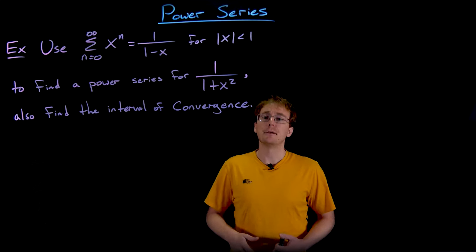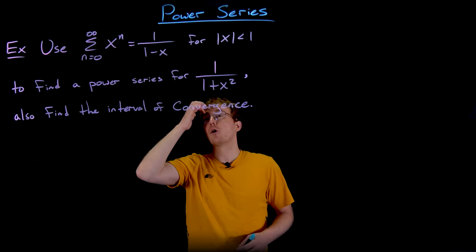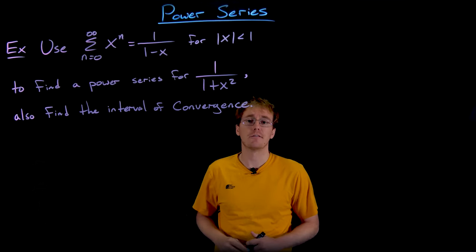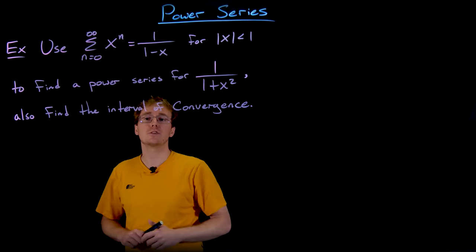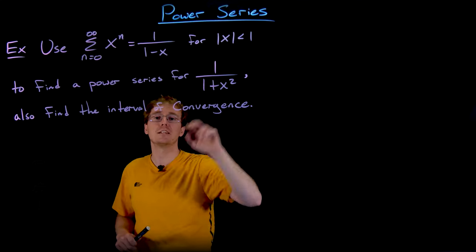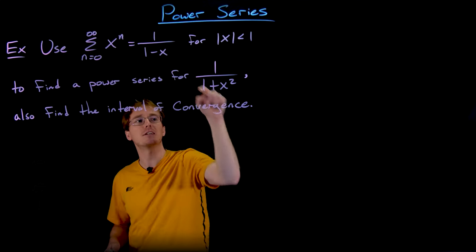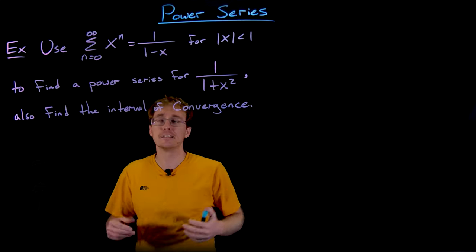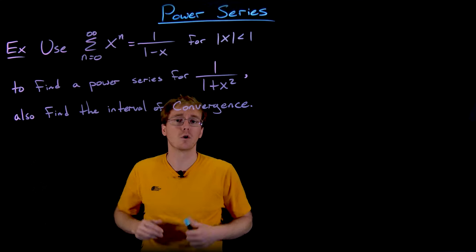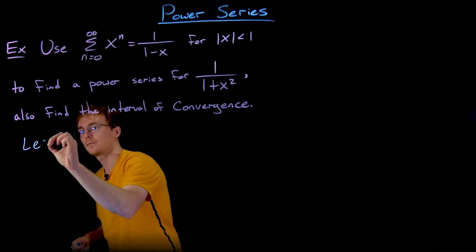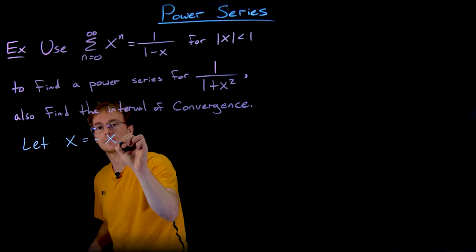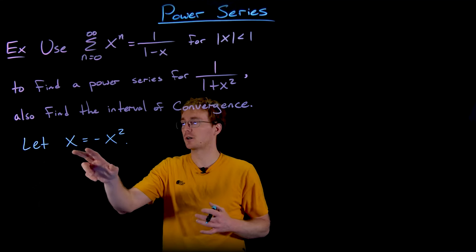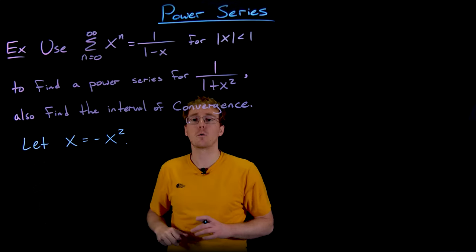All we're going to do here is some algebraic manipulation. We know 1/(1-x) is represented by the sum from n equals 0 to infinity of xⁿ. We'll substitute x with negative x squared: replacing x with -x² in 1/(1-x) turns it into 1/(1+x²), and the same substitution turns the power series into the power series for 1/(1+x²).